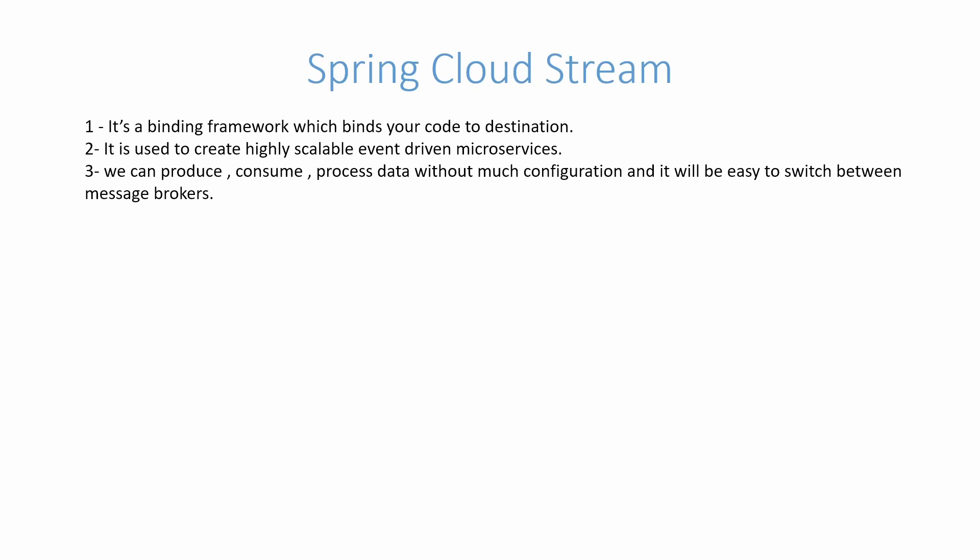Your application can act as a producer, consumer, or a processor, and we need very minimal configuration to build these microservices. With Spring Cloud Stream, it is really easy to switch between message brokers because it provides an abstraction layer over the real message broker. Let's start implementing this practically.